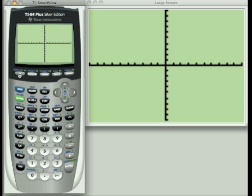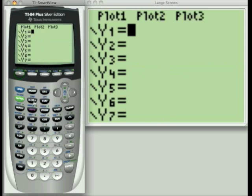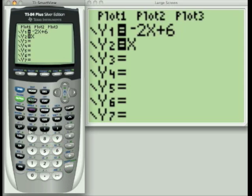I'm going to go back to my y-editor, hit my y equals, and I'm going to enter in two equations. The first equation that I'm going to enter is negative 2x plus 6, and the second equation that I'm going to enter is x squared minus 7x plus 10.